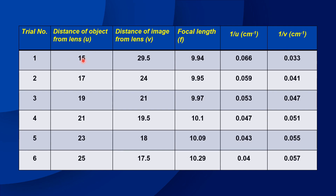The first reading: U is 15, the corresponding V is 29.5. F is equal to UV divided by U plus V. The second reading: U is 14, V is 24, and F is 9.95.